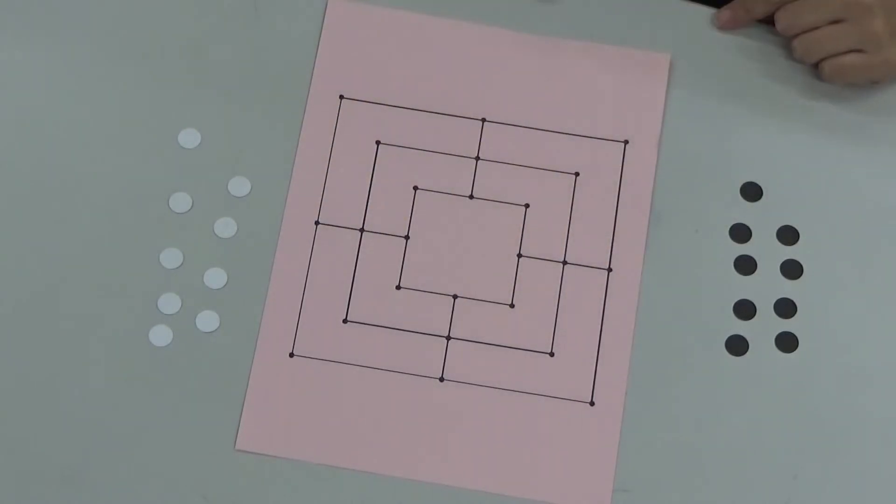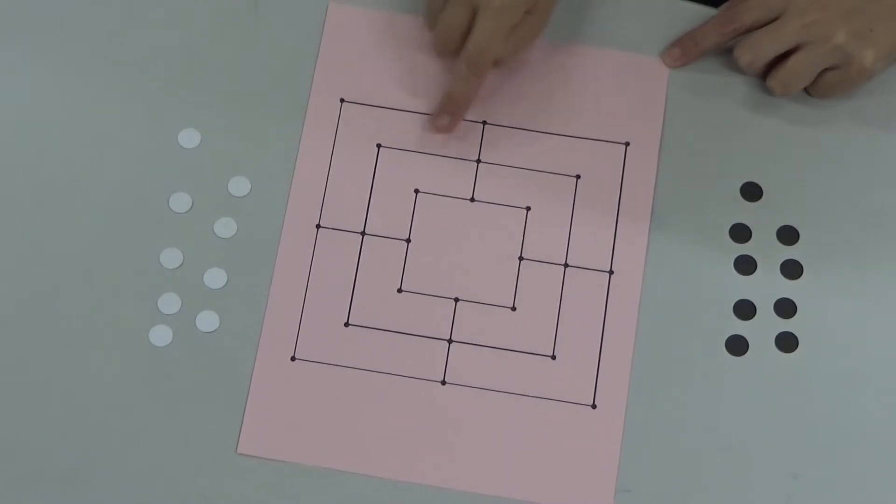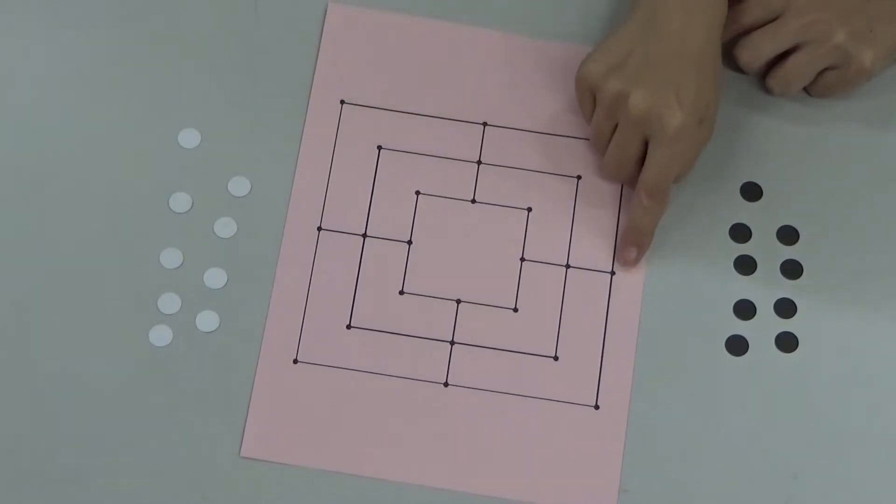Okay, and on the lines you can see there are dots. The dots are the places where you can play your pieces.